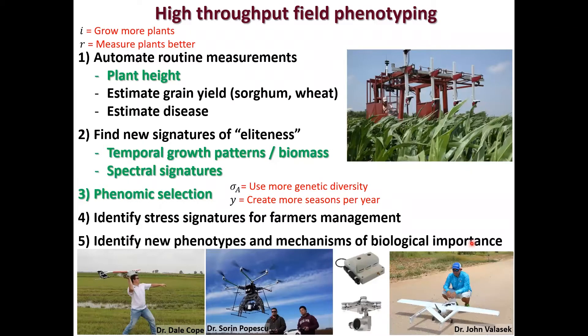I'm primarily here to talk to you today about high-throughput field phenotyping. If we think about the breeder's equation, high-throughput field phenotyping can hit a number of these, allowing us to grow more plants or measure those plants better. So far, what most people are talking about is automating routine measurements — for instance, plant height, which is an important trait in my program and takes a lot of effort, especially in the hottest part of the summer, to measure.